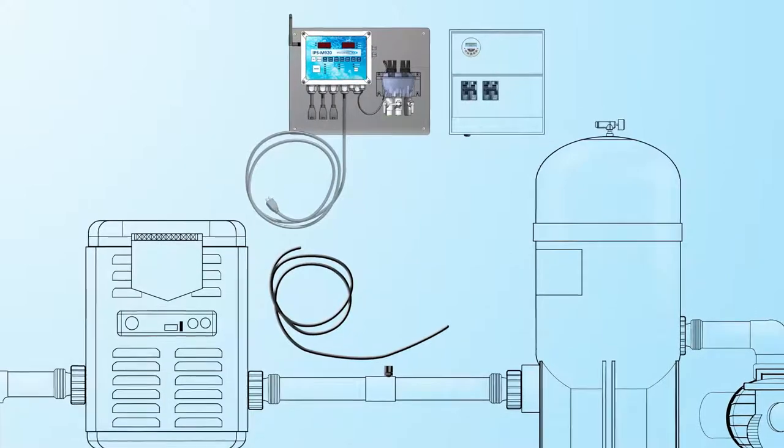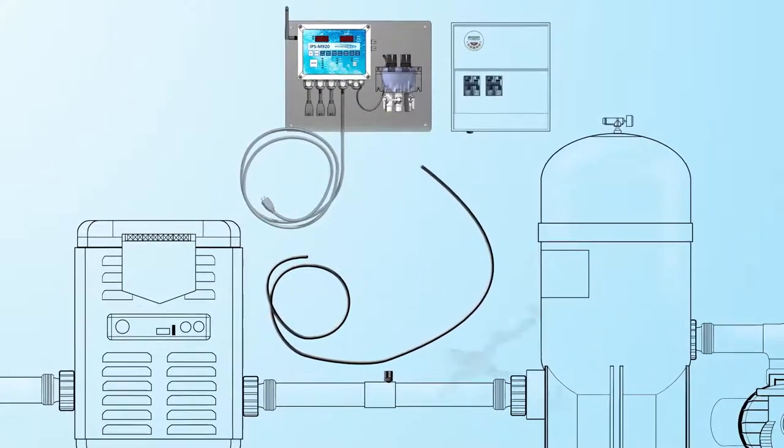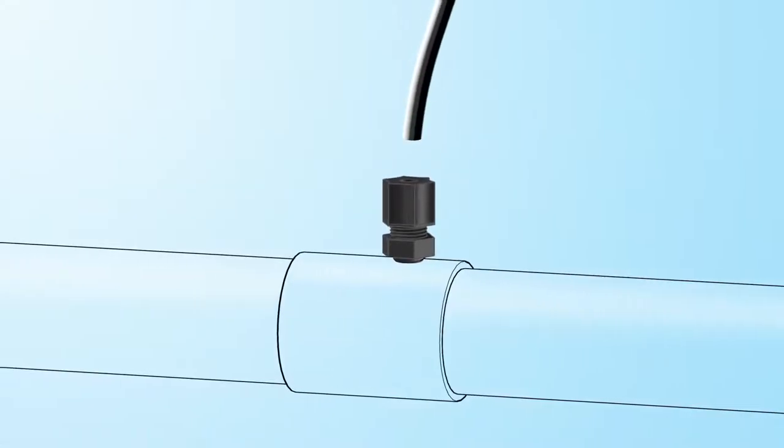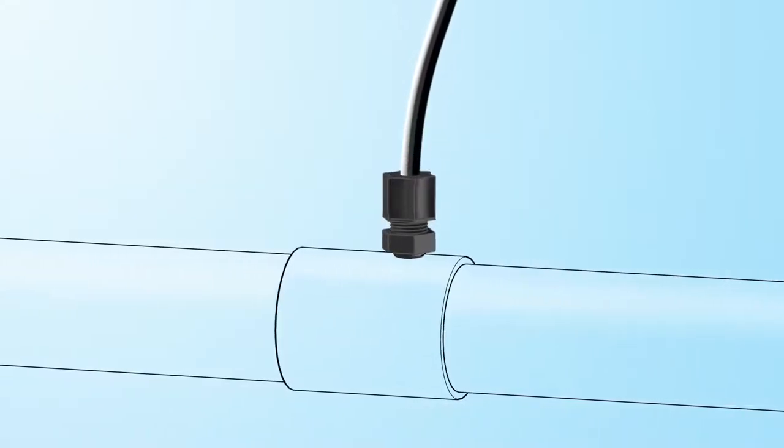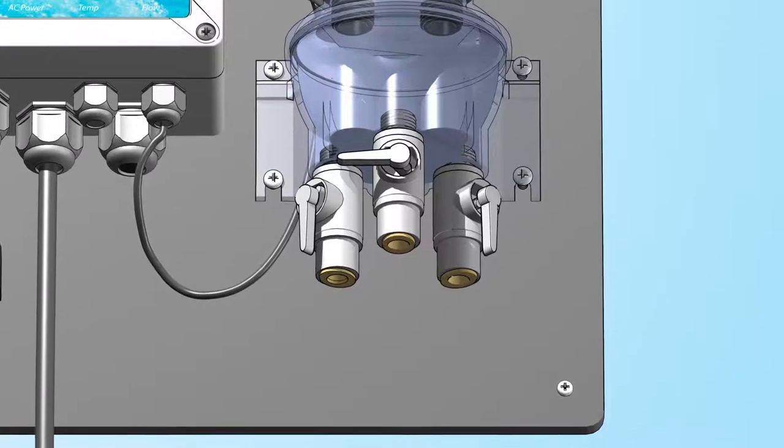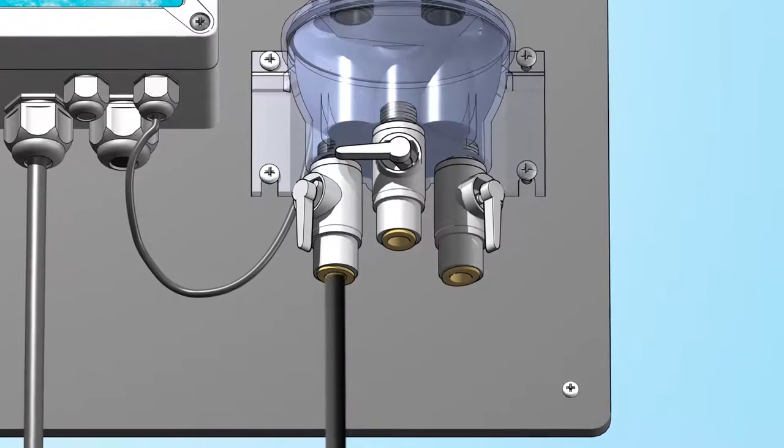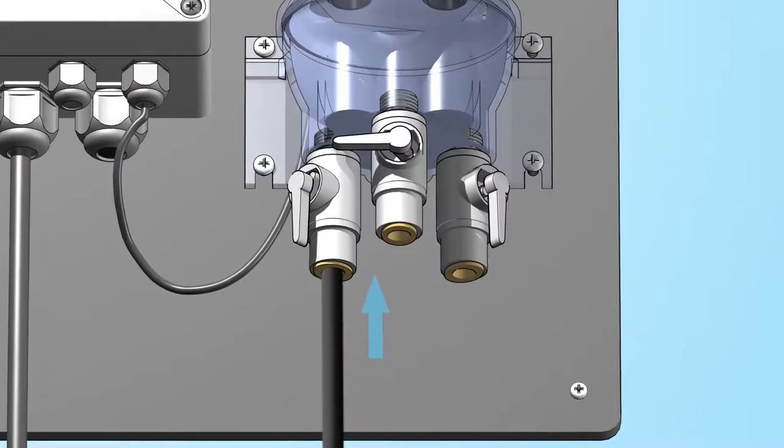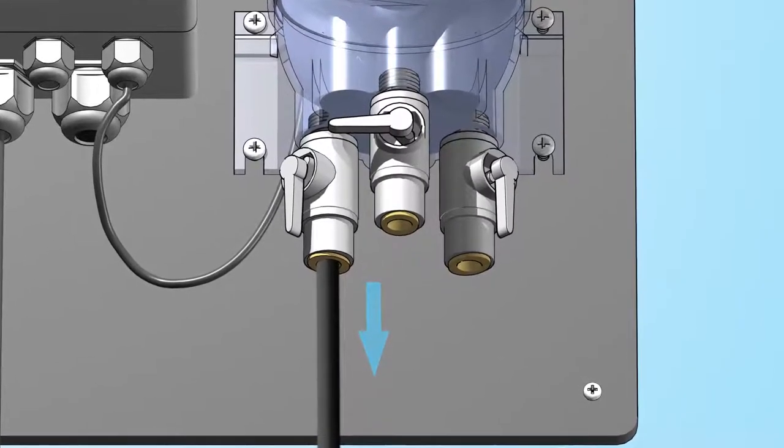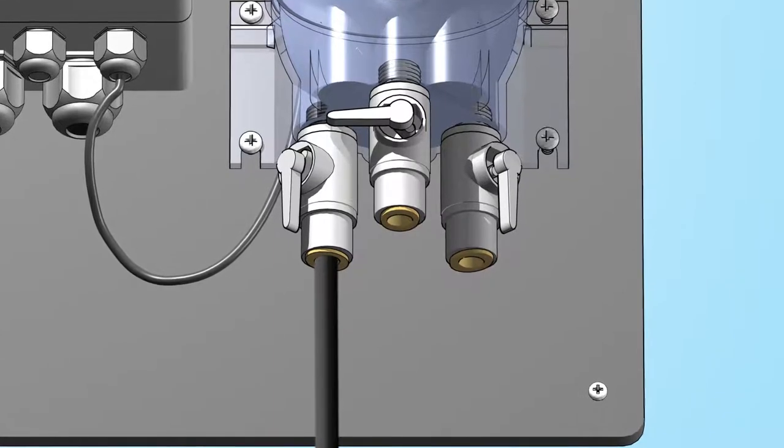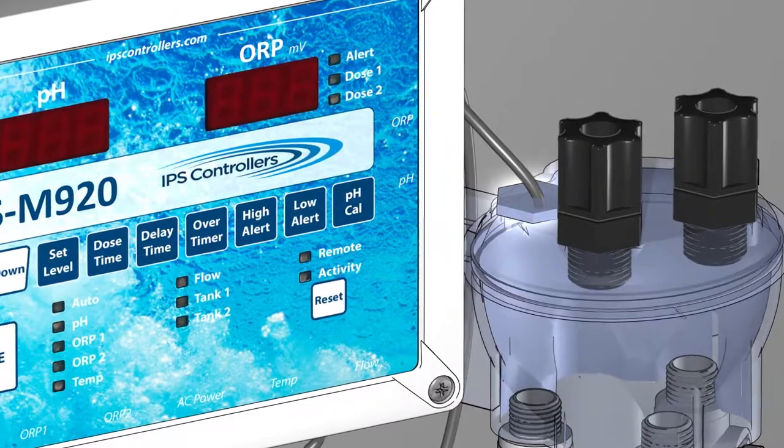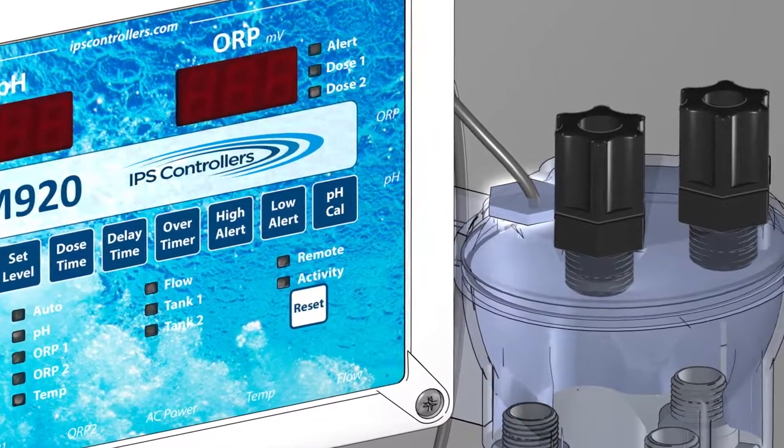Measure a length of tubing long enough to allow easy routing from the pipe fitting to the flow cell. Insert one end of the tubing into the compression fitting and hand tighten the nut to secure the tubing. Insert the other end of the tubing into the valve on the far left of the flow cell. Push the tubing into the valve as far as possible and pull back slightly. This will lock the tubing in place. This port contains an integrated flow switch that will prevent chemicals from feeding into the system when the system is off.